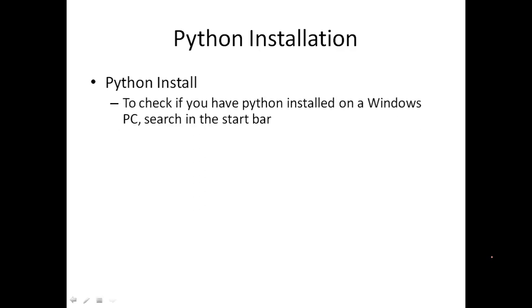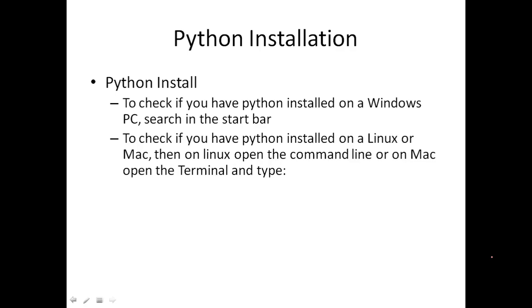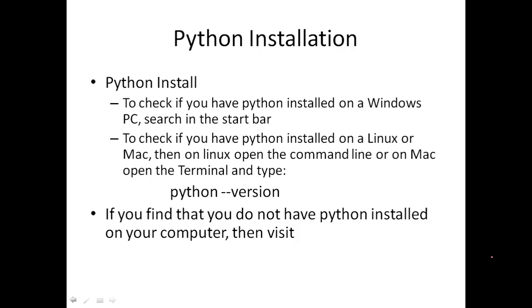Coming to Python installation — if you want to check whether Python is installed on your system, on Windows you search in the start bar. On Linux or Mac, open the terminal and type 'python' to find the version. You should use the latest version — Python 3. If Python is not installed, simply visit the official website; it is freely available to download and all documentation is there.